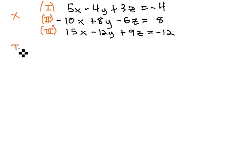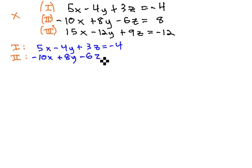Equation 1 is 5x minus 4y plus 3z equals negative 4, and equation 2, negative 10x plus 8y minus 6z equals 8. To get the opposites that we want in front of x, we're going to multiply the first equation by 2.